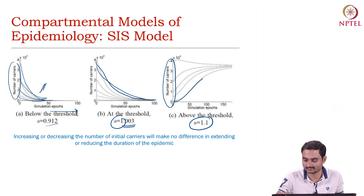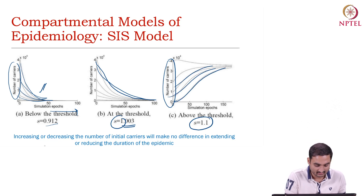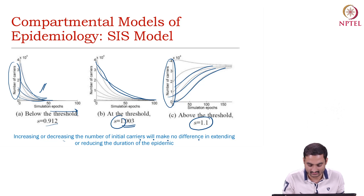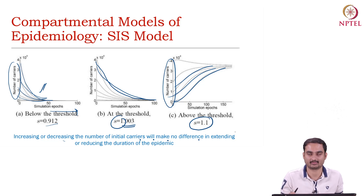But when the strength is above 1, you will see that irrespective of the number of carriers, the epidemic will not die out — it will always increase. So the increasing or decreasing number of initial carriers will have no difference in extending or reducing the duration of the epidemic.